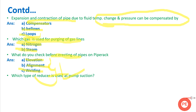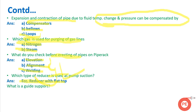What type of reducer is used at pump suction? At pump suction we use an eccentric reducer with the flat side on top. If someone asks what type of reducer is used at pump discharge, we use a concentric reducer. If you want to learn more about reducers, you may refer to another video on pump suction design to understand the difference between eccentric and concentric reducers.